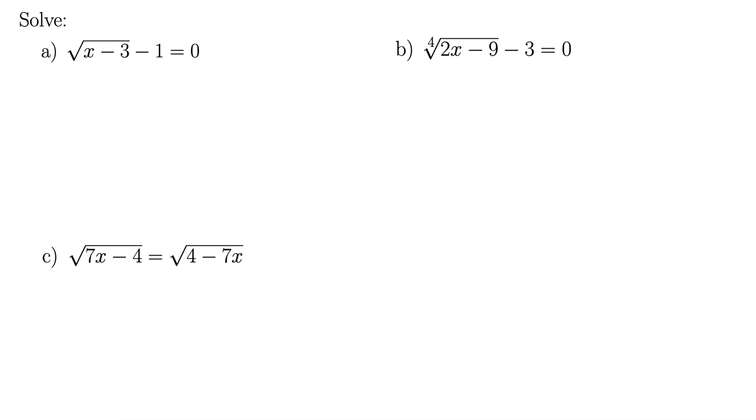In this example, we have some radical equations to solve. The first one says radical x minus 3 minus 1 equals 0. The first thing to do with these kinds of equations always is to isolate this radical first. So I'll just say isolate the radical first.